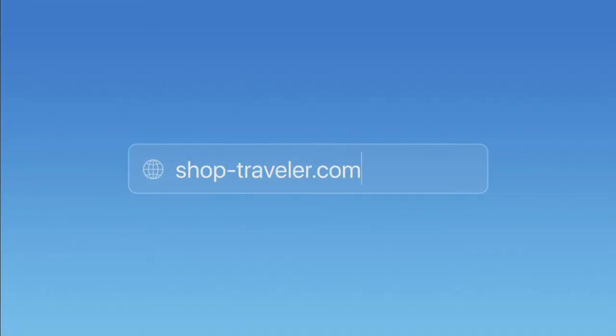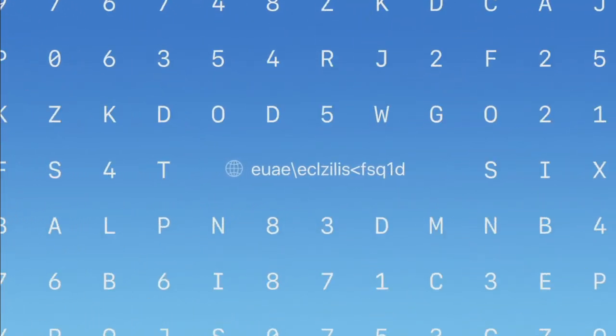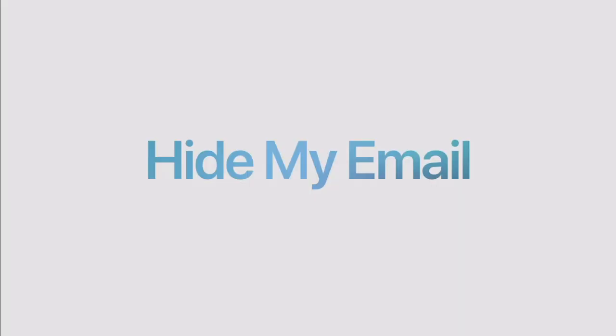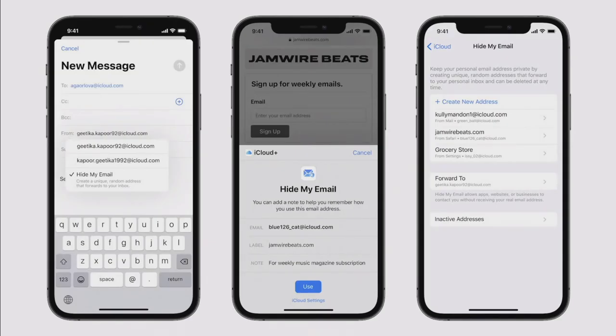Apple is upgrading its paid subscription to something called iCloud Plus. iCloud Plus combines everything you love about iCloud with great new features, starting with Private Relay. Private Relay lets you browse Safari in a more secure and private way — it encrypts the traffic leaving your device and sends all requests through two separate internet relays, so no one, including Apple, can see both who you are and what sites you're visiting, without compromising performance. Another feature is Hide My Email, which lets you share a unique random address that forwards messages to your personal inbox, built right into Mail, Safari, and iCloud settings.